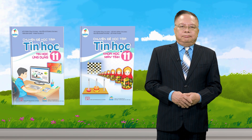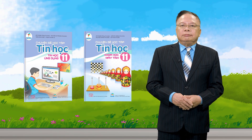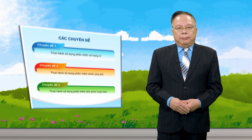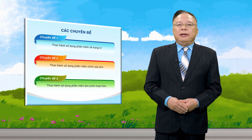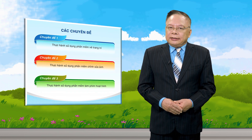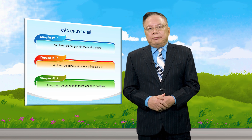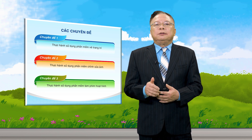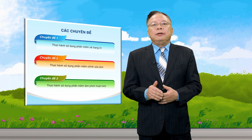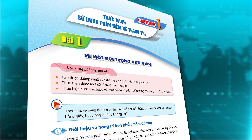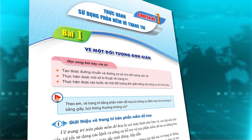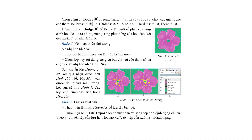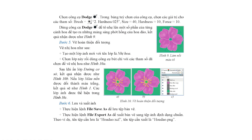Quyển chuyên đề học tập tin học 11 tin học ứng dụng gồm 3 chuyên đề độc lập: thực hành sử dụng phần mềm vẽ trang trí, thực hành sử dụng phần mềm trình sửa ảnh và thực hành sử dụng phần mềm làm phim hoạt hình. Là sự tiếp nối của chủ đề EICT, học sinh được rèn luyện kỹ năng thông qua thực hành, tạo ra sản phẩm.